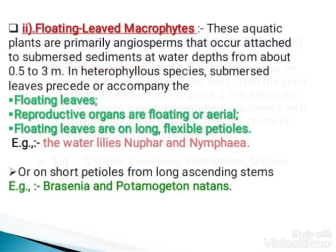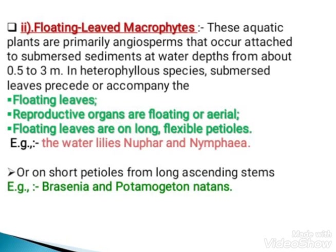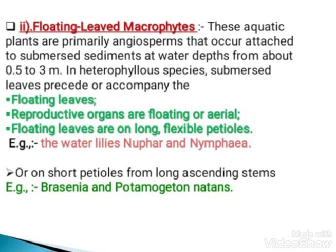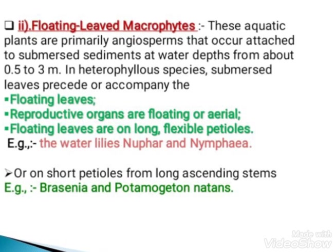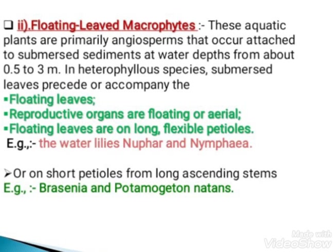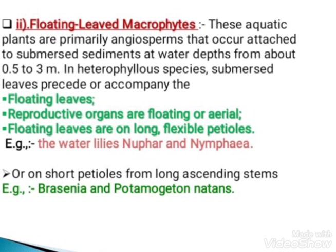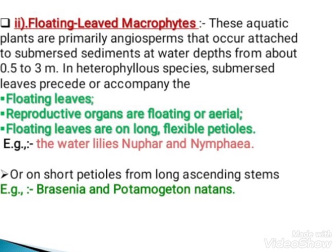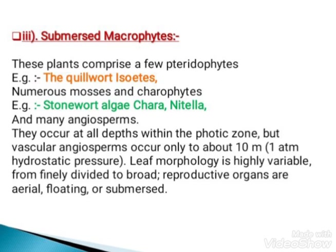Moving on to Point 2: floating-leaved macrophytes. These aquatic plants are primarily angiosperms that occur attached to submerged sediments at water depths from about 0.5 to 3 meters. In hydrophilous species, submerged leaves precede and accompany the floating leaves. Reproductive organs are floating or aerial. Floating leaves are borne on long flexible petioles. Their examples are the water lily, Nuphar, and Nymphaea, which also have petioles from long ascending stems.